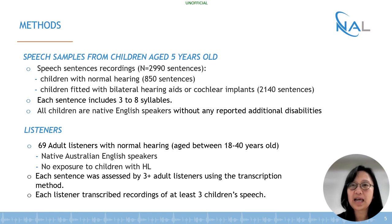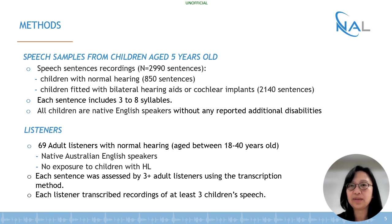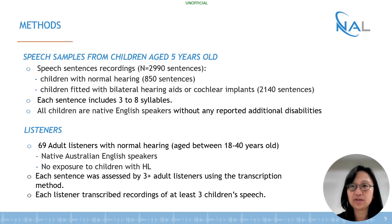We recruited 69 adult native Australian English speakers as listeners to transcribe these children's speech samples. All listeners had normal hearing and no prior experience interacting with children with hearing loss — that is why we call them naive listeners. To assess speech intelligibility, at least three adults transcribed exactly what they heard word by word for each sentence, with each listener transcribing samples from at least one child with normal hearing and one child with hearing loss.